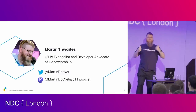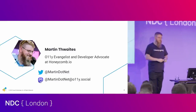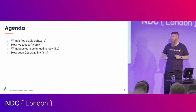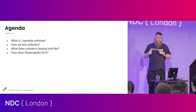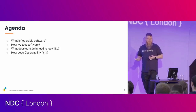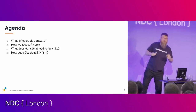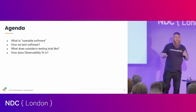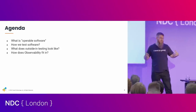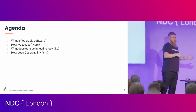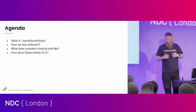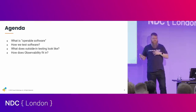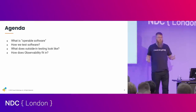They pay for me to be here, so come see us. So what we're going to talk about today: we're going to talk about operable software, what my definition of operable software is. We're going to talk about how we test software as developers, we're going to look at something called outside-in testing, and we're going to talk about how we can use observability and how that fits into the operable software lifecycle.